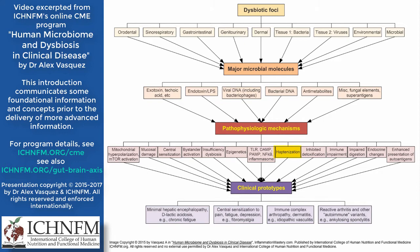Haptenization is the combination of a microbial molecule with a human molecule, and when we combine them, that creates a new antigen or immunogen — a process called haptanization or neoantigen formation. We'll also talk about inhibited detoxification and immune impairment as a result of microbial exposure, and also the enhanced presentation of autoantigens along with bystander activation. As a result of all those factors interacting with the patient's unique genomic, nutritional, and hormonal profile, we see certain patterns of disease and inflammation.